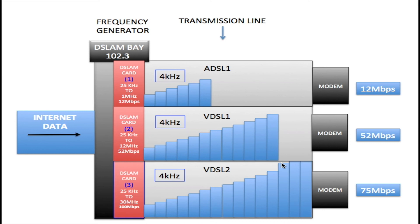What I want you to take away from this video is the relationship between frequency, bandwidth, and speed. As you can see, frequency dictates the speed — the higher the frequency, the more data you can send. However, as frequency gets higher you use up more bandwidth, until eventually you run out of bandwidth and can't send any more data on that particular line.